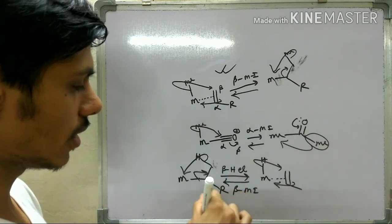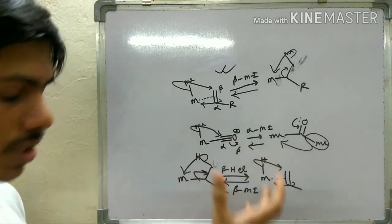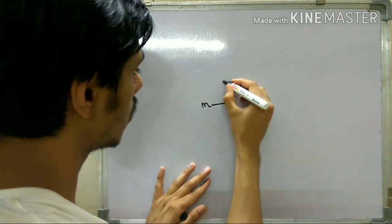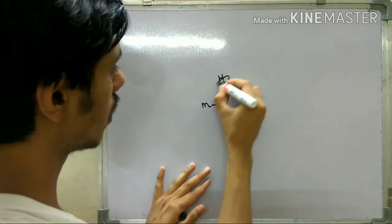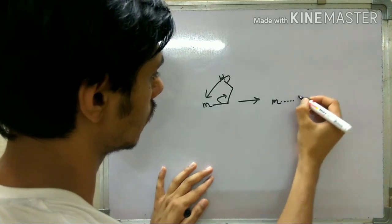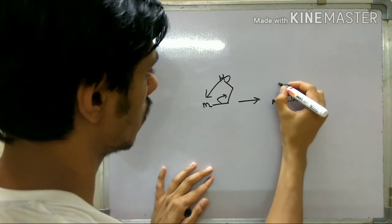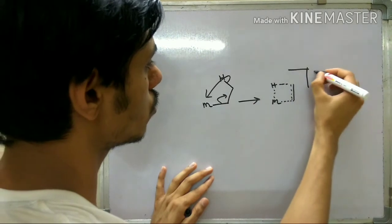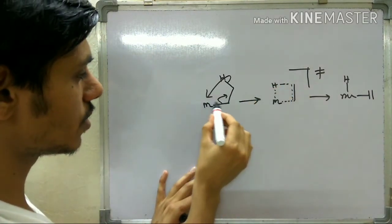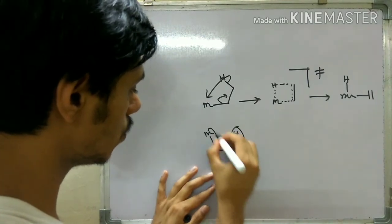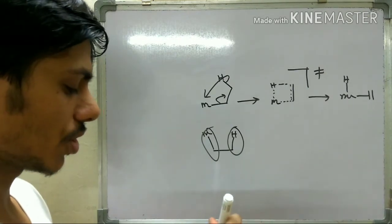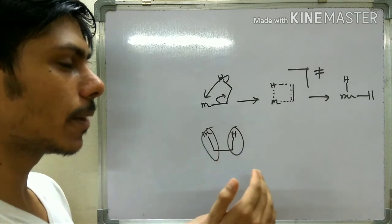Like reductive elimination, beta hydride elimination also requires a specific stereoelectronic factor: it requires syn stereochemistry. For beta hydride elimination, the transition state is a four-membered ring, and therefore your C-M bond and C-H bond must be syn (cis) to each other. If they are trans to each other, beta hydride elimination will not occur. This has far-reaching implications on the Heck reaction, which I have already covered in some separate videos.